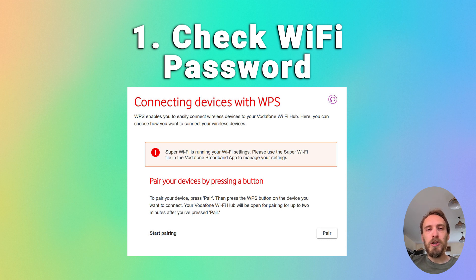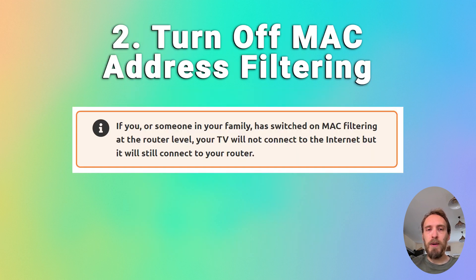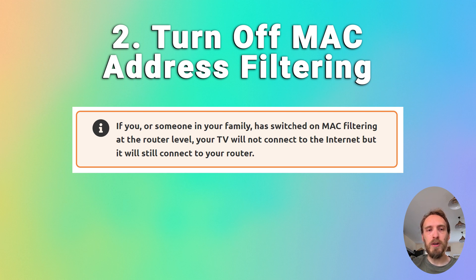You also want to make sure that your router is not set up for MAC address filtering. If you or someone else in your family has switched this on at the router level, your TV will be able to connect to the router but it won't be allowed to connect to the internet through the router. So if you're seeing a TV that is connecting to the router but can't get internet, check for MAC address filtering.